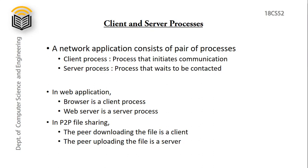To exchange messages, we have client and server processes. There are two processes required for a network application: the client process, which initiates the communication, and the server process, which waits to receive requests from clients. In a web application, the browser acts as a client process and the web server acts as a server process. In a P2P file sharing system, the peer downloading the file is the client and the peer uploading the file is the server.